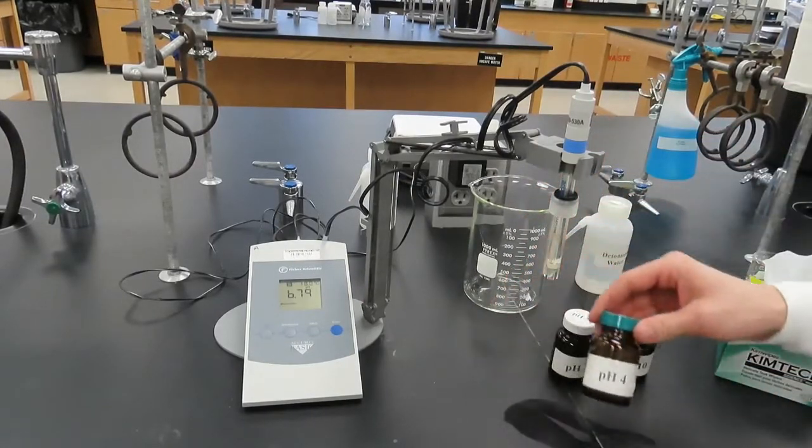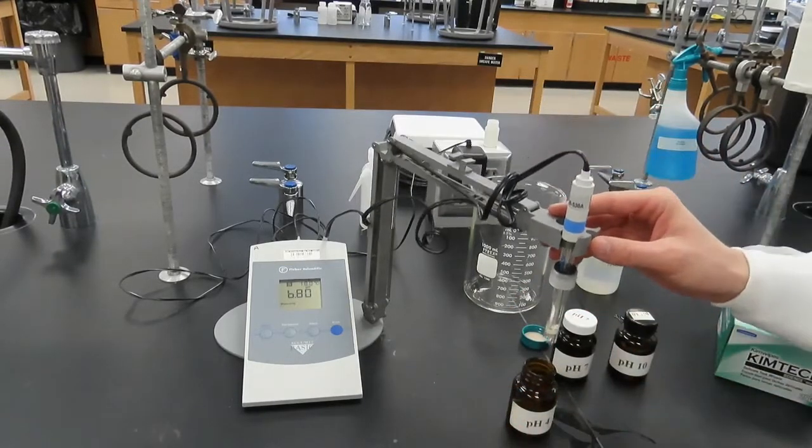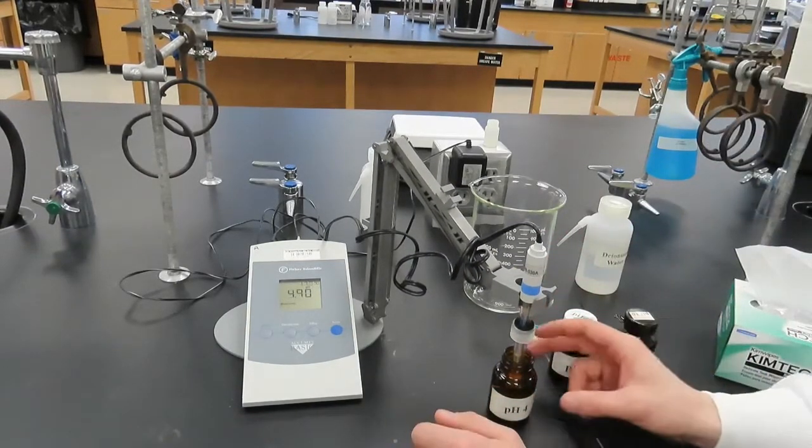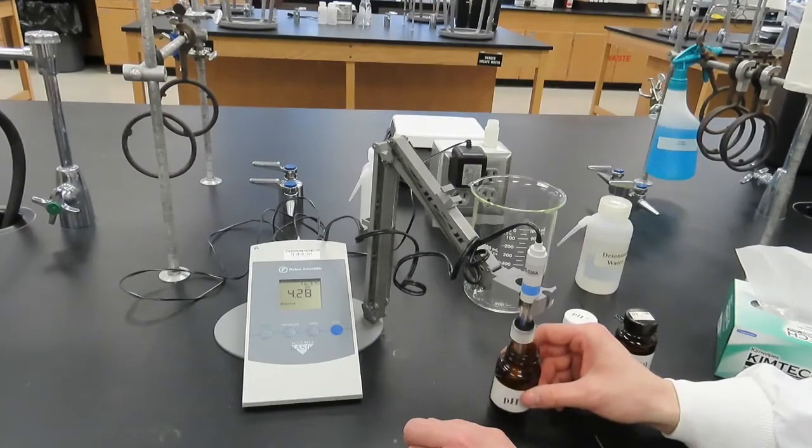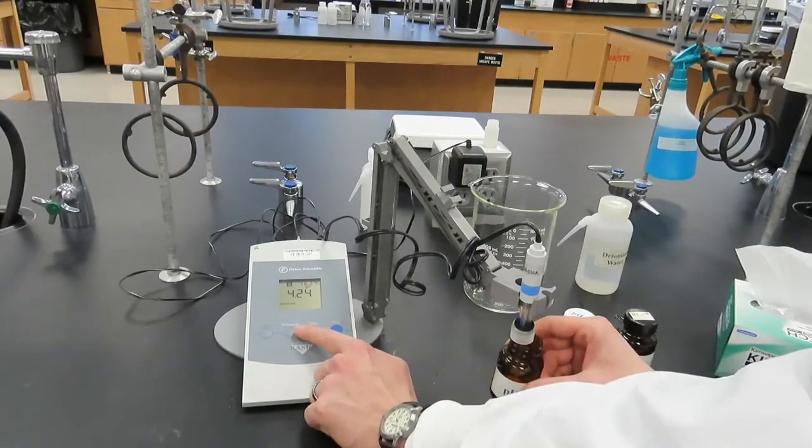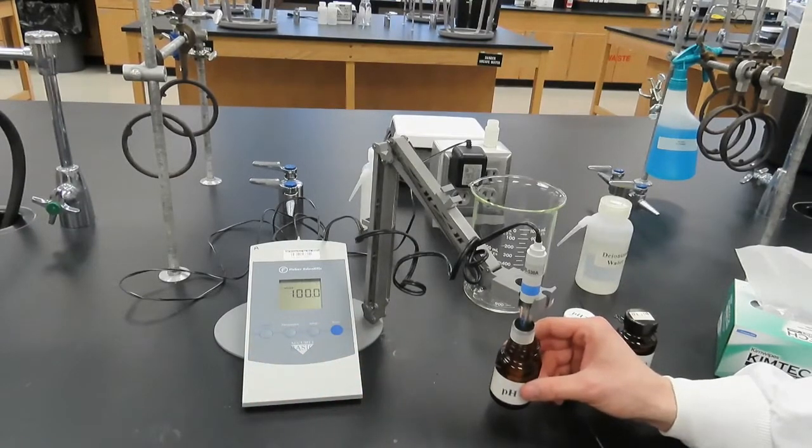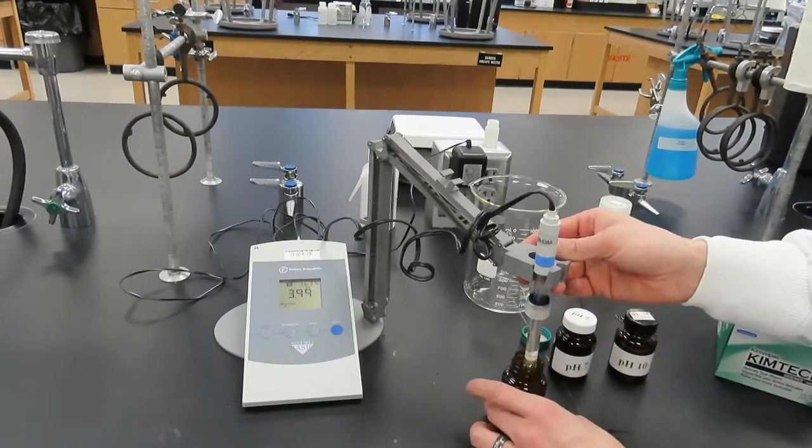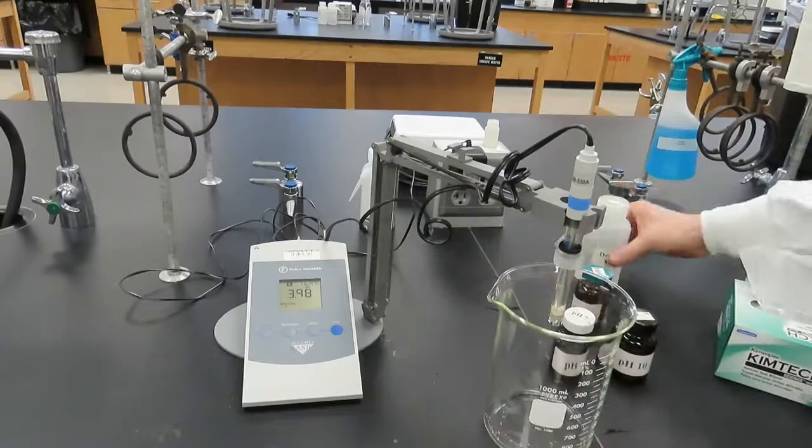To calibrate, we will first use a buffer solution of pH 4. Ensure the bottom of the electrode is fully immersed in the solution and swirl the solution. When the pH value in the display stabilizes, press the Standardize button while continuing to swirl the pH 4 buffer solution. Remove the electrode from the pH 4 buffer solution, rinse, and dry it.